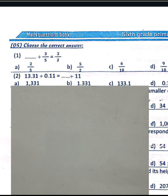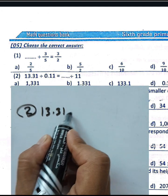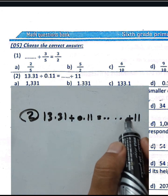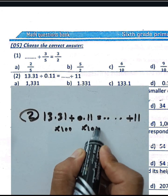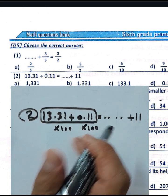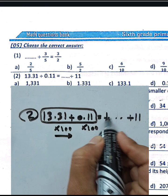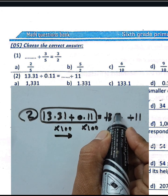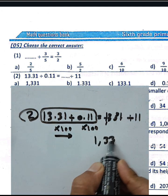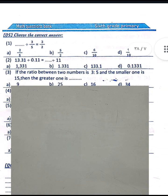Question number two: 13.31 divided by 1.00. To cancel the decimal in the divisor, multiply both the dividend and divisor by one hundred. Move the decimal point two places to the right in both numbers. The dividend becomes 1331 and the divisor becomes one thousand, so the result is 1331.